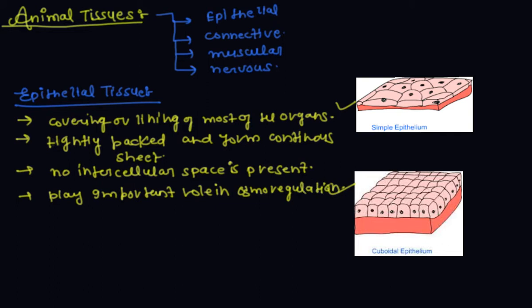All epithelial tissues are separated from the underlying tissue by an extracellular fibrous basement membrane. The epithelial tissues are of the following types: the first is simple epithelium, and these are four types.